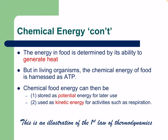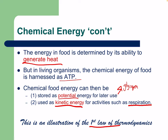The energy in food is determined by its ability to generate heat. You may have heard of the thermic effect of food — when we eat, we actually have a rise in body temperature. In living organisms, the chemical energy of food is harnessed as ATP. It can be stored as potential energy for use later (in glycogen or fat stores) or used as kinetic energy for activities such as respiration. This illustrates the first law of thermodynamics: energy cannot be lost or gained, it just changes form.